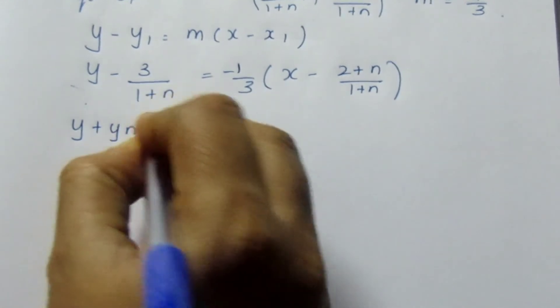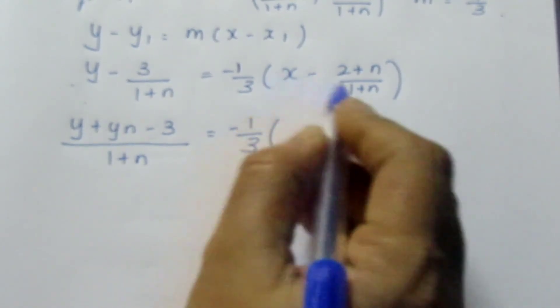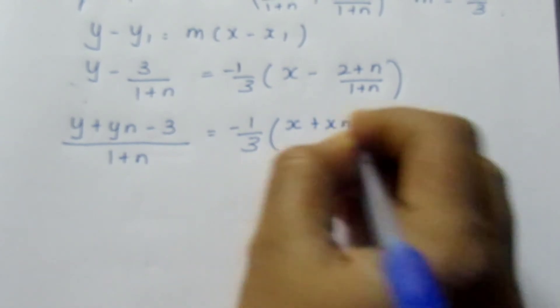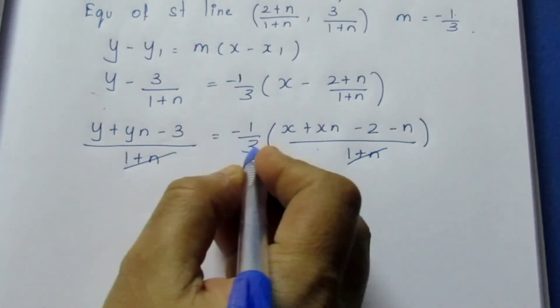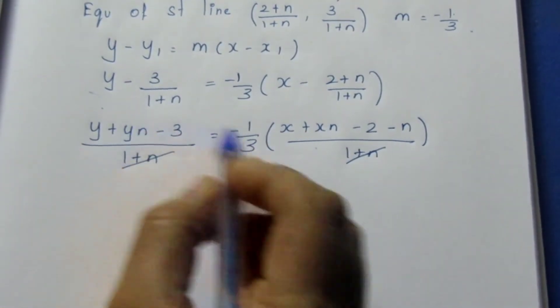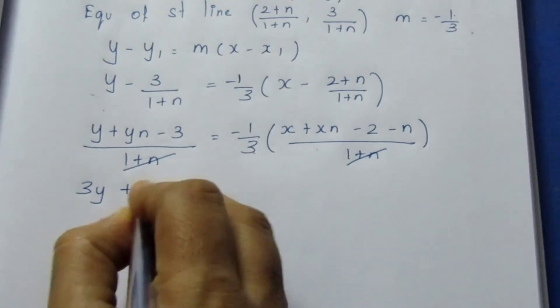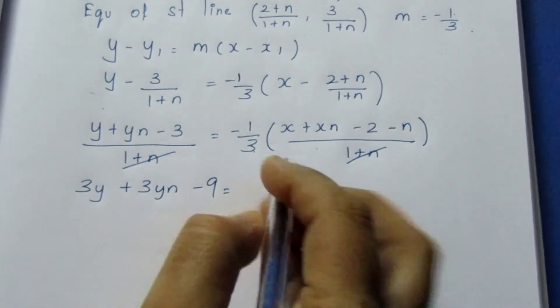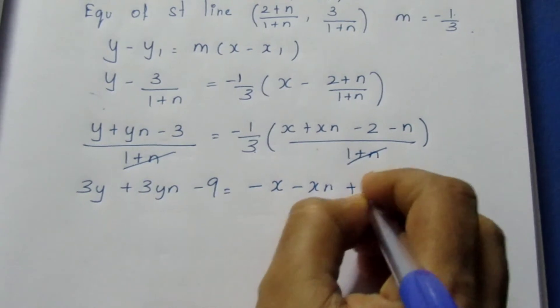Taking LCM on the left side: (y(1 + N) - 3) / (1 + N) = -1/3 × (x(1 + N) - (2 + N)) / (1 + N). The (1 + N) terms cancel since they are multiplied. Multiplying 3 inside gives 3y(1 + N) - 9 = -(x(1 + N) - (2 + N)), which expands to 3y + 3yN - 9 = -x - xN + 2 + N.